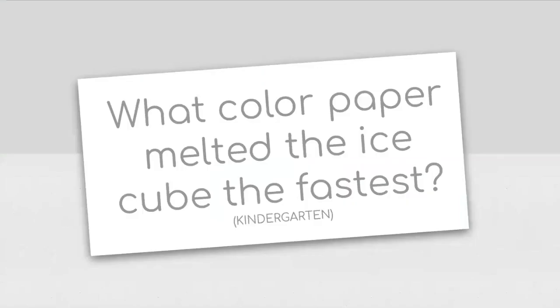What color paper melted the ice cube the fastest? This investigation is from kindergarten. We went outside with two ice cubes. We placed them on two different pieces of construction paper. Which color construction paper melted the ice cube the fastest? The black construction paper melted the ice cube the fastest. Because remember, black, the color black, darker colors, like navy blue, they absorb the sun's heat. Lighter colors, like white, reflects the sun.